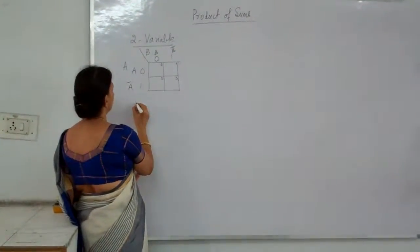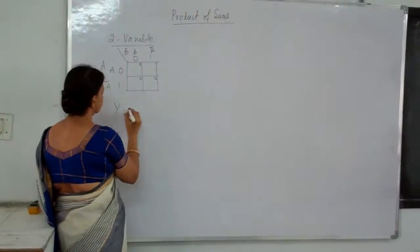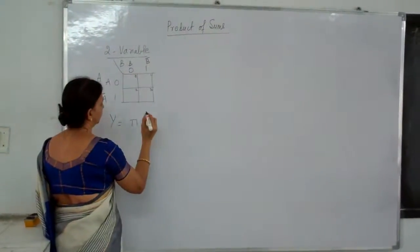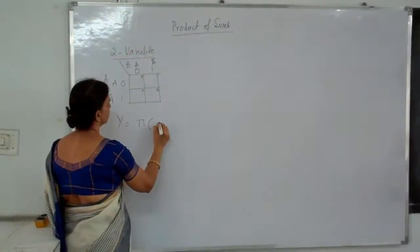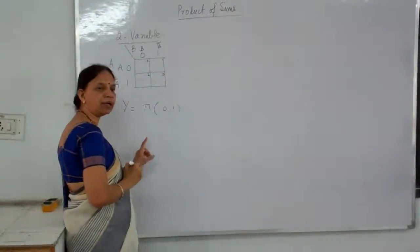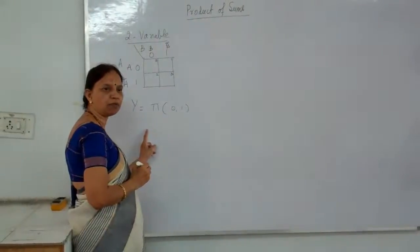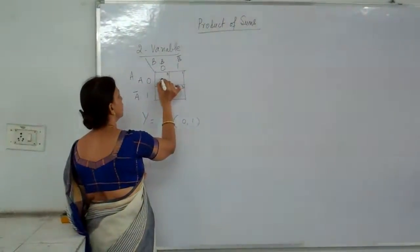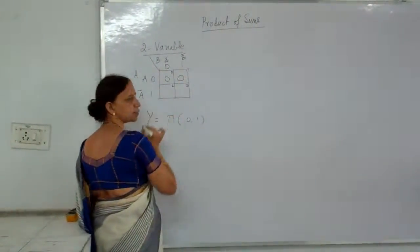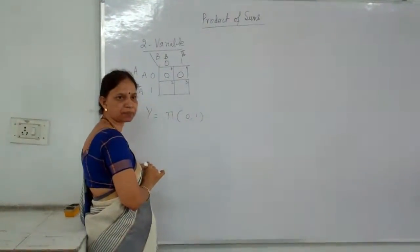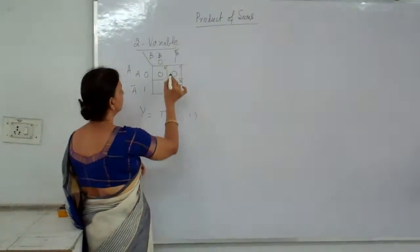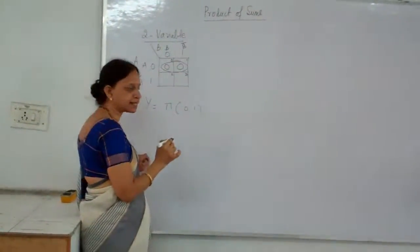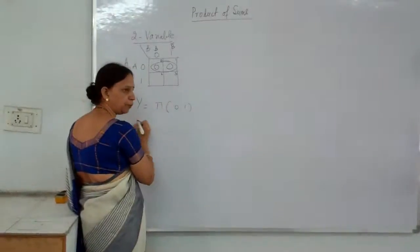Now the truth value can be written as Y is equal to — since it is Product of Sums — it is a product of these 2 sums, written at positions 0 and 1. Instead of adding 1s, now we will write them as sums. The procedure remains the same: group the adjacent cells.